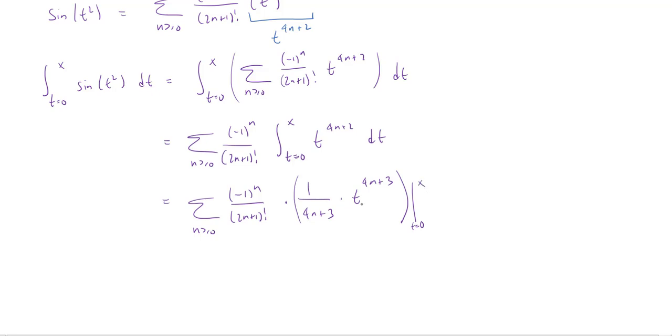When t is equal to 0, I'm going to get 0 to a power who's no less than 3. So that's just going to give me a 0. So I'm only going to get anything at x. And that's easy, I just put the x in.